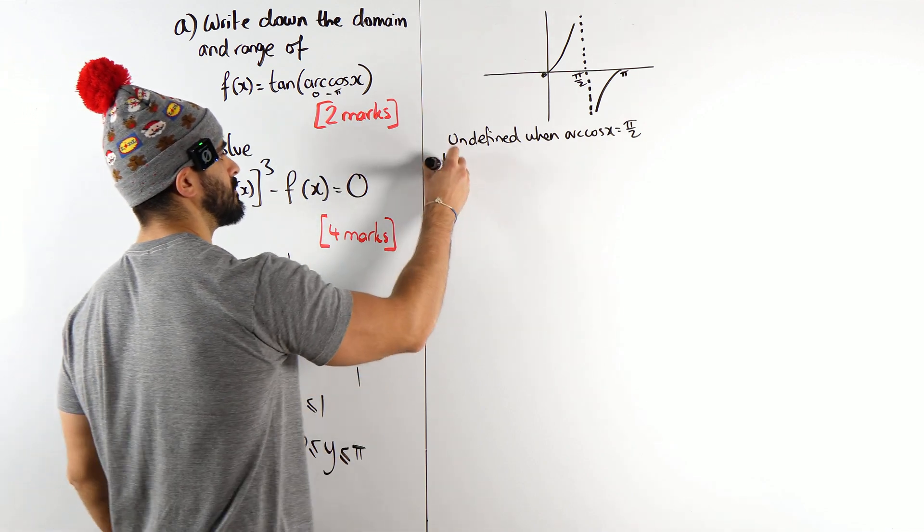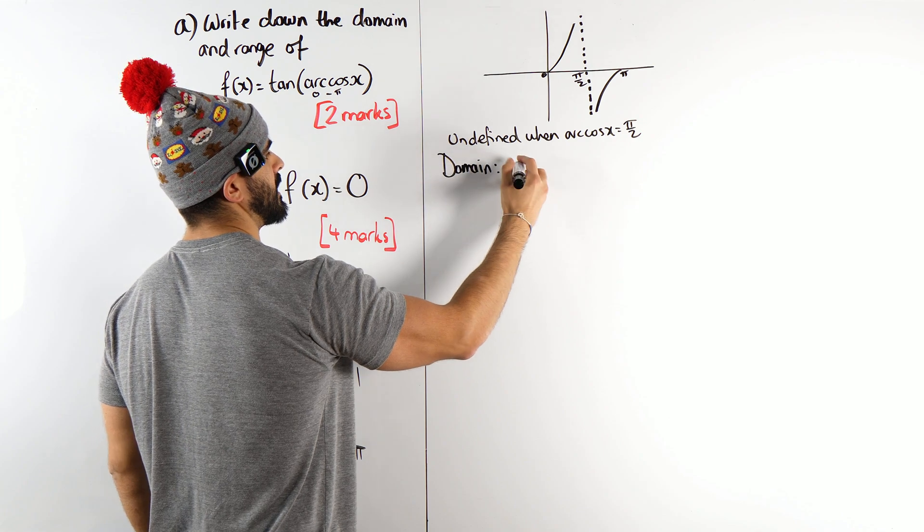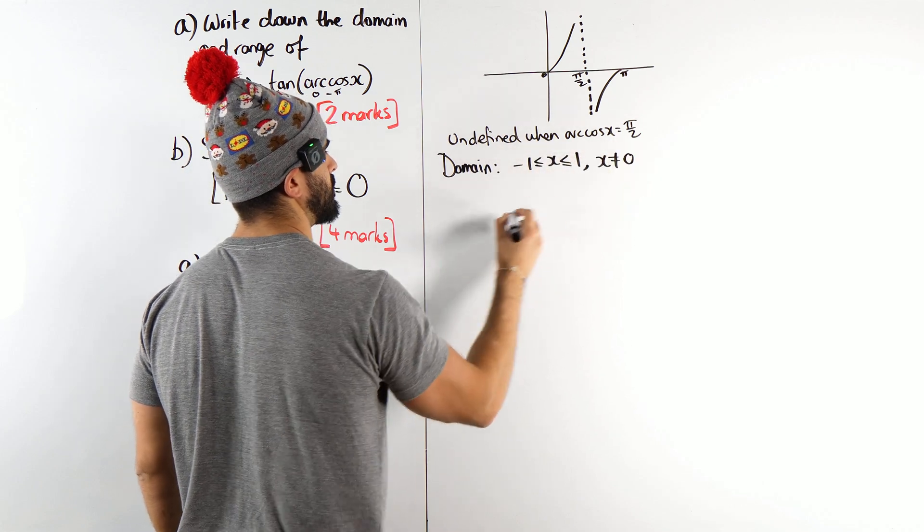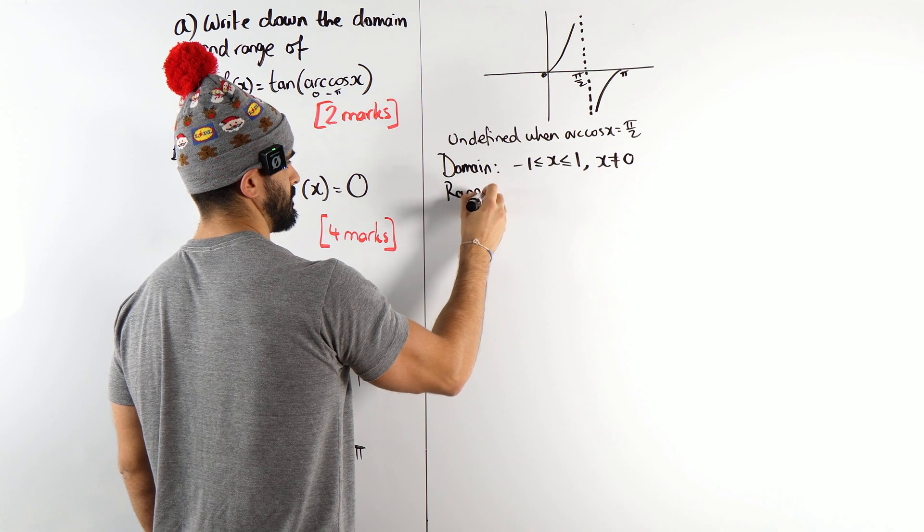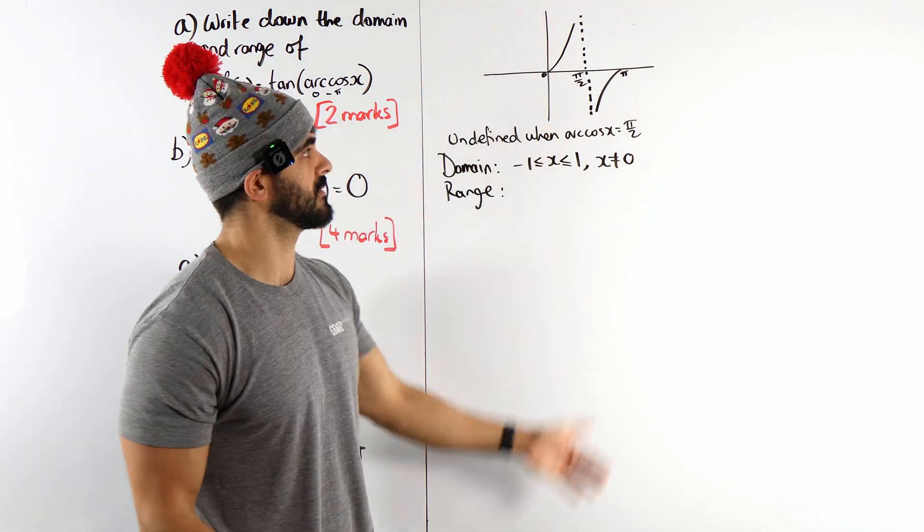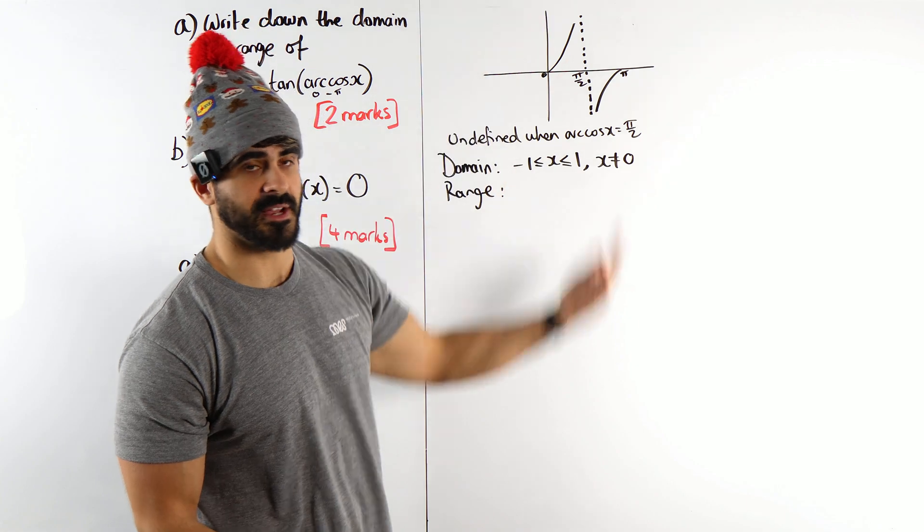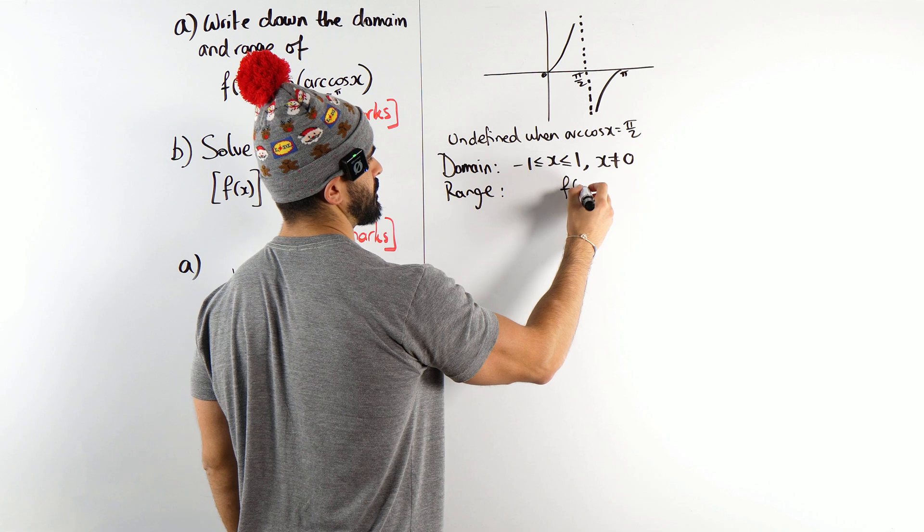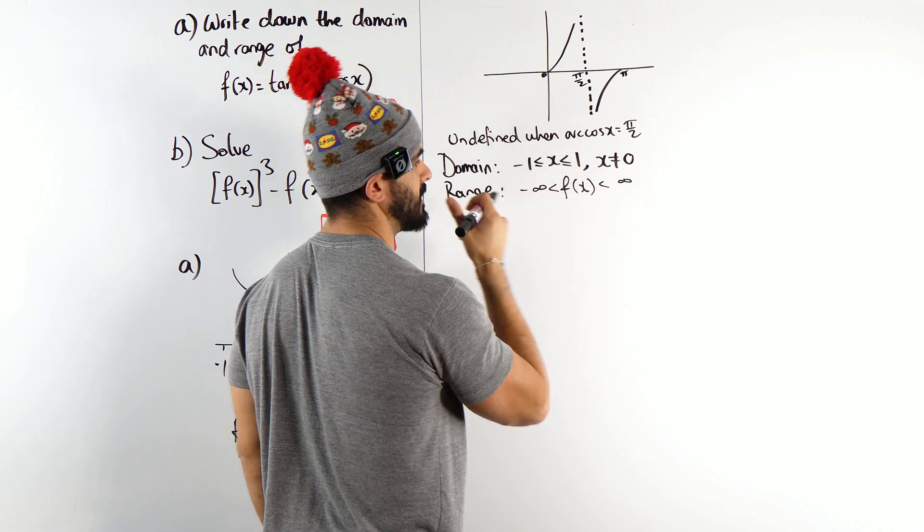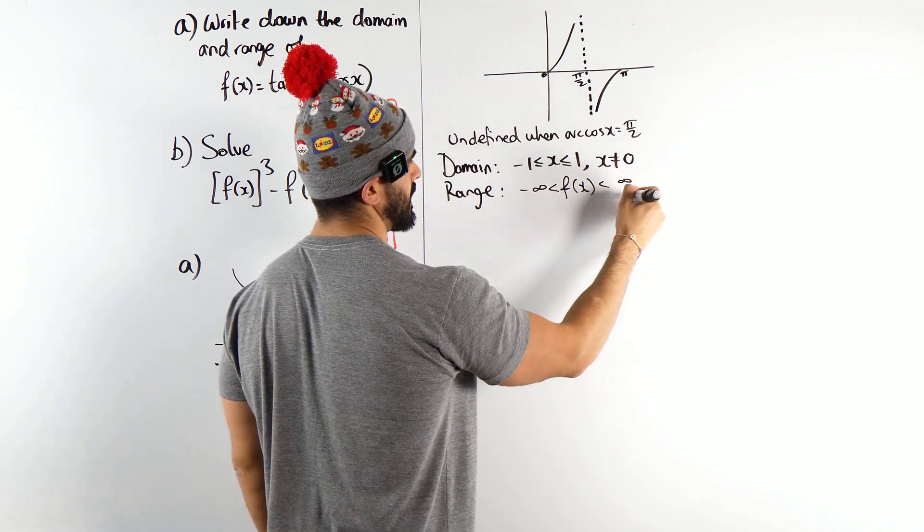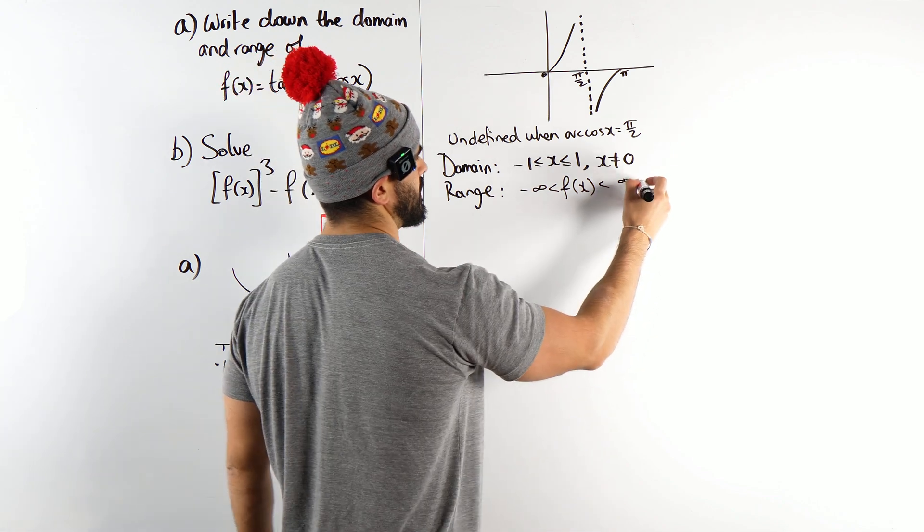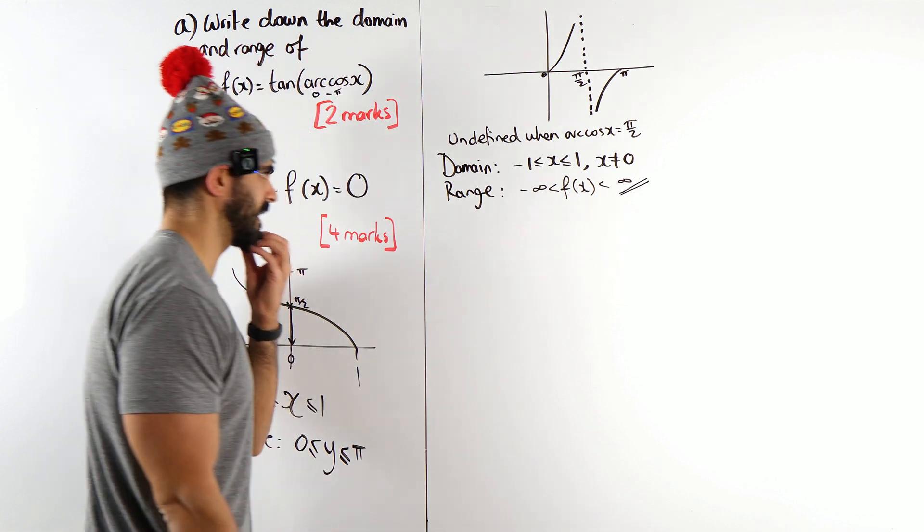Okay, so my domain is between minus 1 and 1, x cannot equal zero. My range, if you look at this, goes up to infinity and down to minus infinity. The whole range is defined. So we're going to say f(x) is between minus infinity and infinity. And that is it. I mean, you could say that x is real, f(x) is the real numbers. But I'm going to leave it like this.